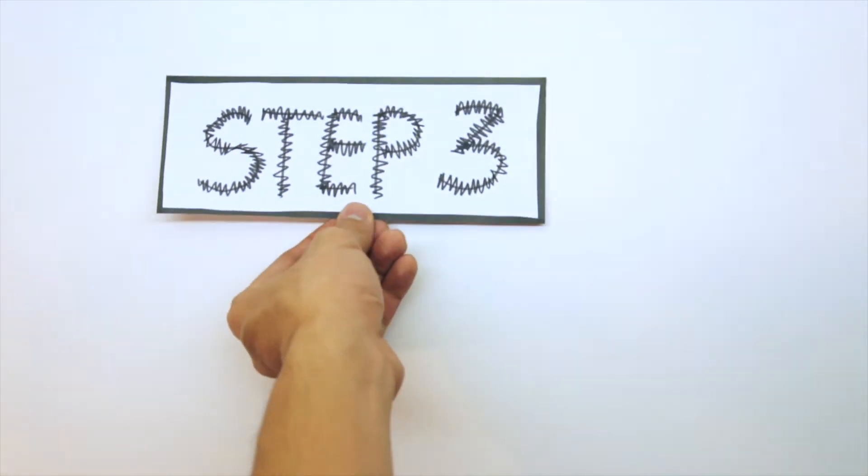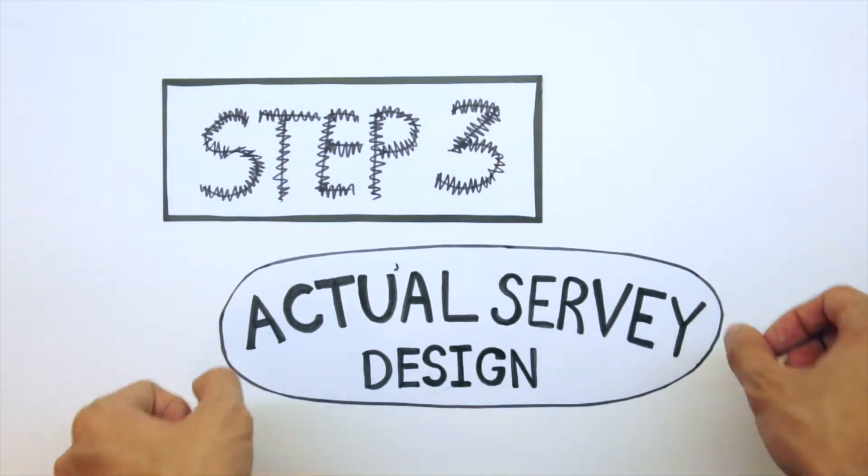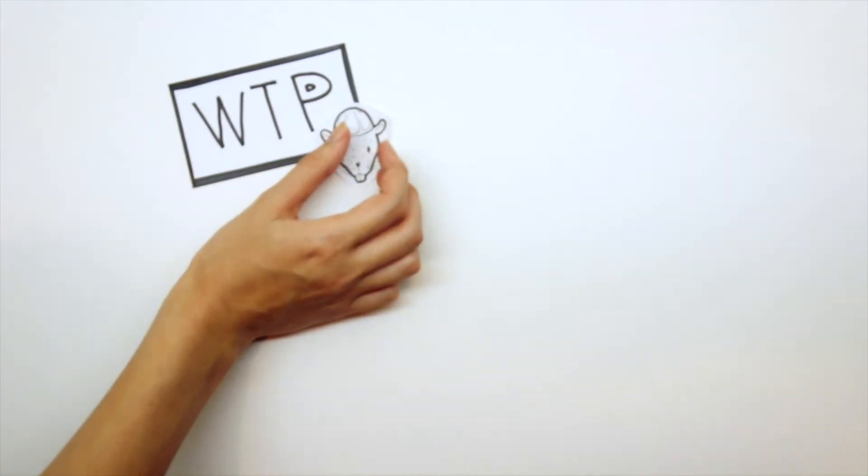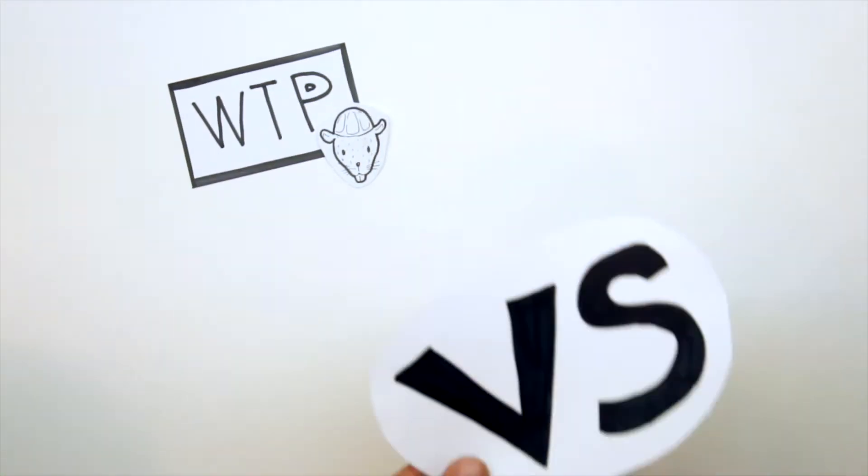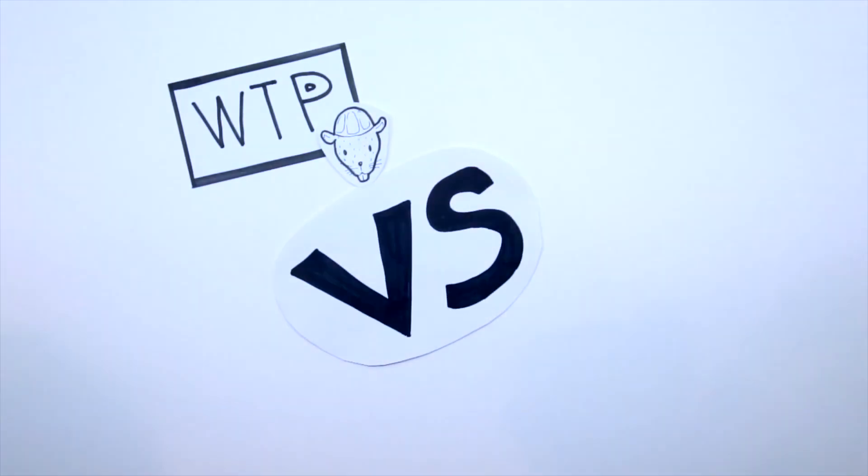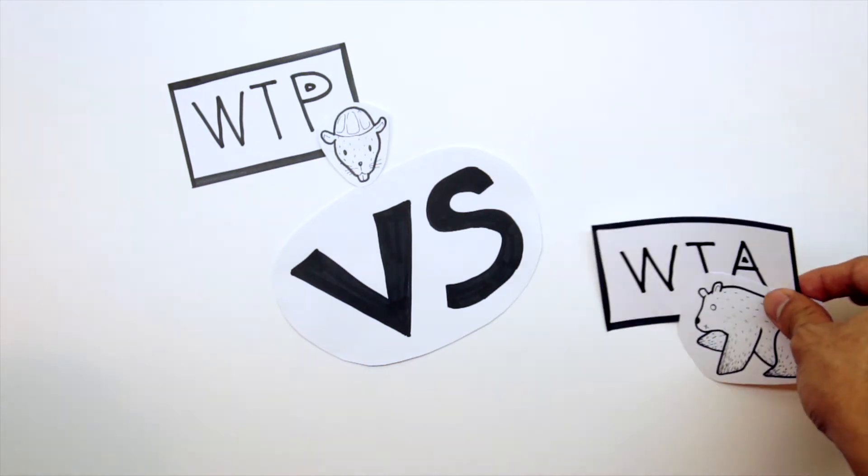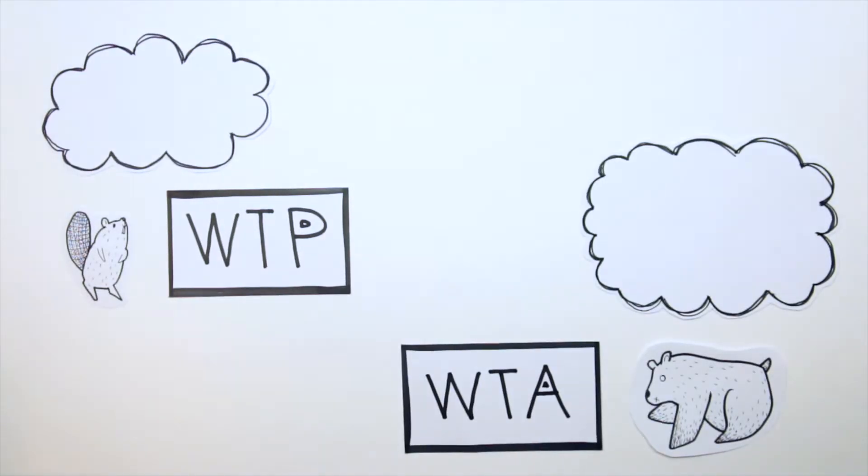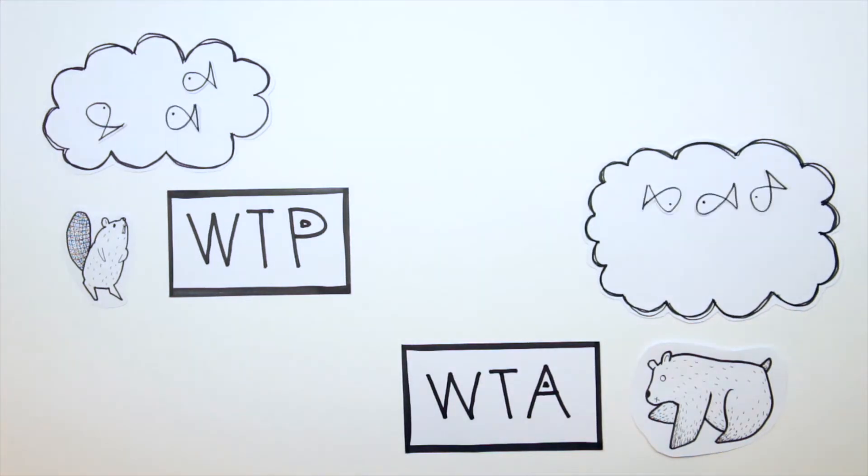Step three, actual survey design. It needs to be carefully designed. People will gain and lose differently. If the policy benefits people, choose willingness to pay. If the policy makes losses, choose willingness to accept. The WTP, however, is limited to an individual's income. WTA, on the other hand, is unbounded.